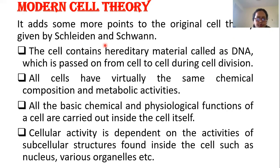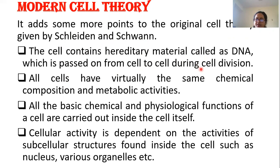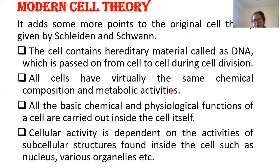Now, modern cell theory. It adds some more points to the original cell theory given by Schleiden and Schwann. First, the cell contains hereditary material called DNA, which is passed on from cell to cell during cell division. So as cells divide, the genetic material also passes into the new cells, and the continuity of the species is maintained. All cells have virtually the same chemical composition and metabolic activities.